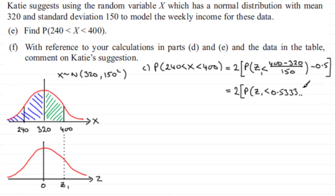All we need to do is look this value up in our tables and you'll find that you get 0.7019. We now subtract 0.5, work this out, and you end up with 0.4038.